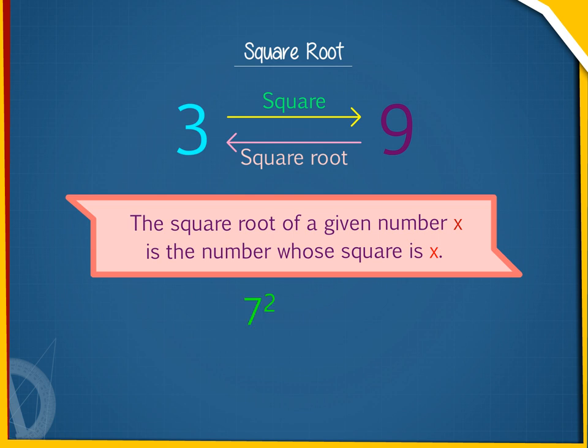Since 7 squared equals 49, the square root of 49 is 7. Since 12 squared equals 144, the square root of 144 is 12.